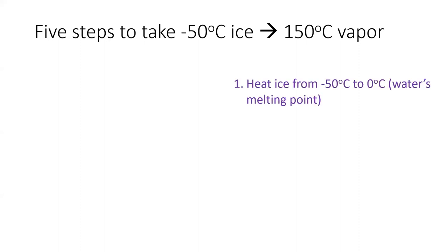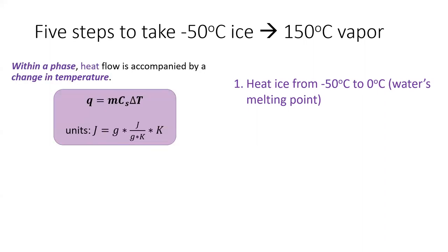First, our ice starts out too cold to melt. We have to raise the temperature of the ice to the melting point of water, which is zero degrees Celsius. Heating ice from negative 50 to zero is no different than any other calorimetry process, and we'll use q equals mc delta t to calculate the heat needed.